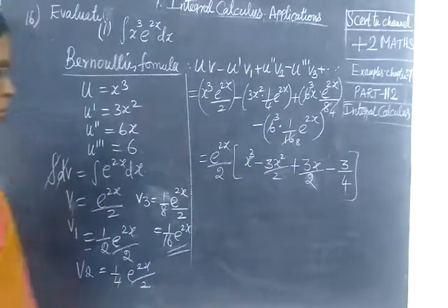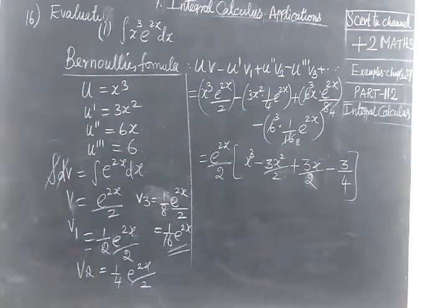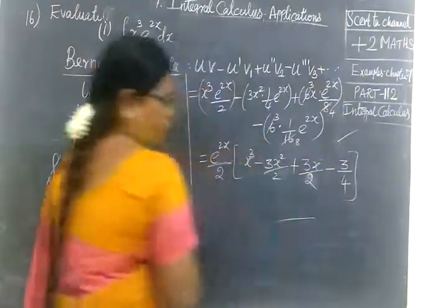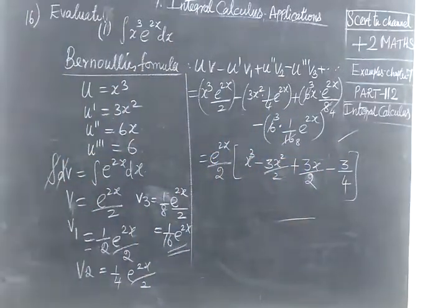That's the answer: e^(2x) times (x³ minus 3x² by 2 plus 3x by 2 minus 3 by 4). So this answer is correct. Thank you.